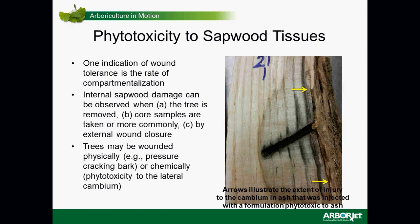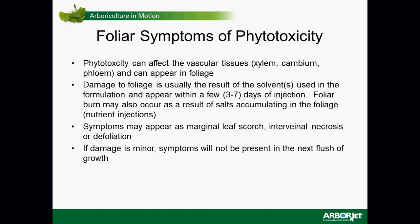Not only is there sapwood or vascular phytotoxicity to the cambium tissues and inner bark, but some products can cause phytotoxicity to the foliage — what you're more likely to see in the canopy. You'll see damage that expresses as marginal leaf scorch, interveinal necrosis, or leaf drop and defoliation. This can occur in a relatively short period — anywhere from three days to a week after treatment.